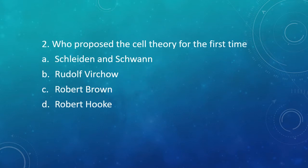Question 2: Who proposed the cell theory for the first time? Option A: Schleiden and Schwann. Option B: Rodolphe Virchow. Option C: Robert Brown. Option D: Robert Hooke. The correct answer is Option A — Schleiden and Schwann proposed the cell theory for the first time. However, their theory was not complete, so it was modified later on.